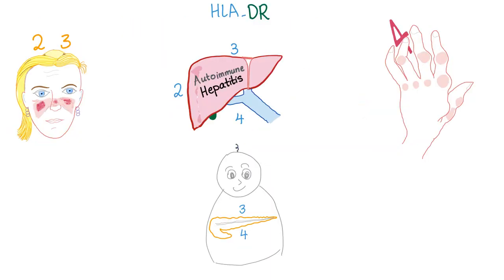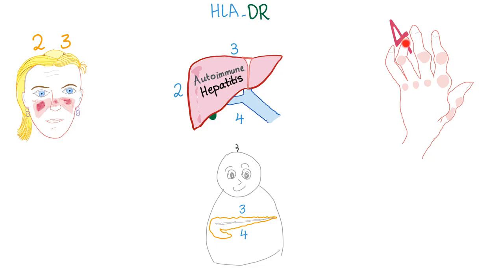Now mnemonic time. 'I'm 23 — positive for HLA-DR2 and 3' — that's lupus, easy. For autoimmune hepatitis: DR2, 3, and 4. For rheumatoid arthritis, look at those rheumatoid nodules and ulnar deviation — she's likely rheumatoid factor positive and anti-CCP positive — that's DR4. Mnemonic: I hung a 4 by the fourth finger.